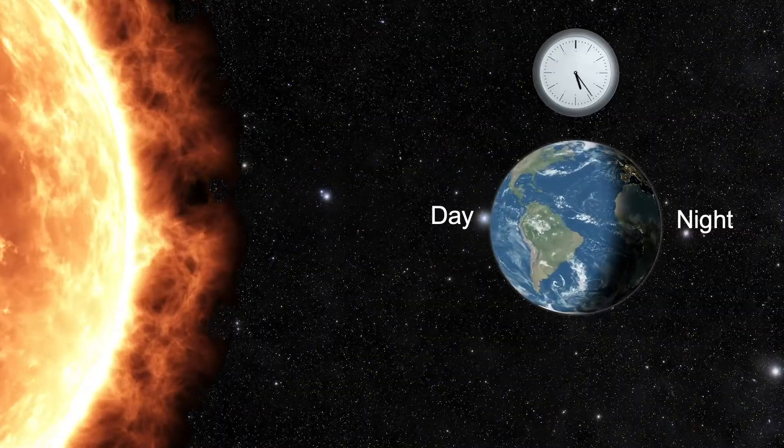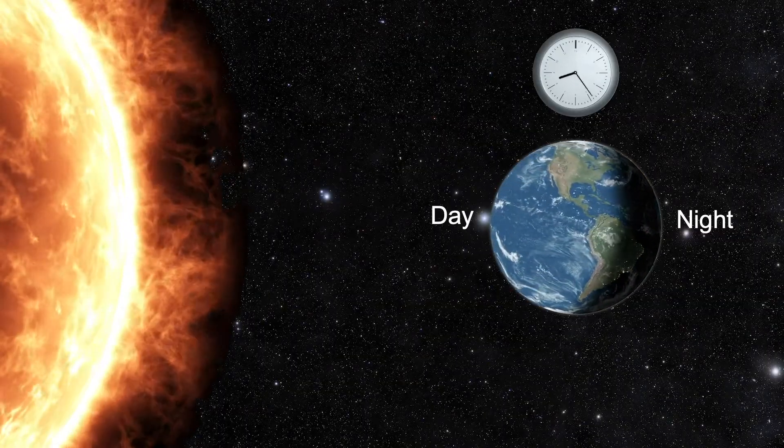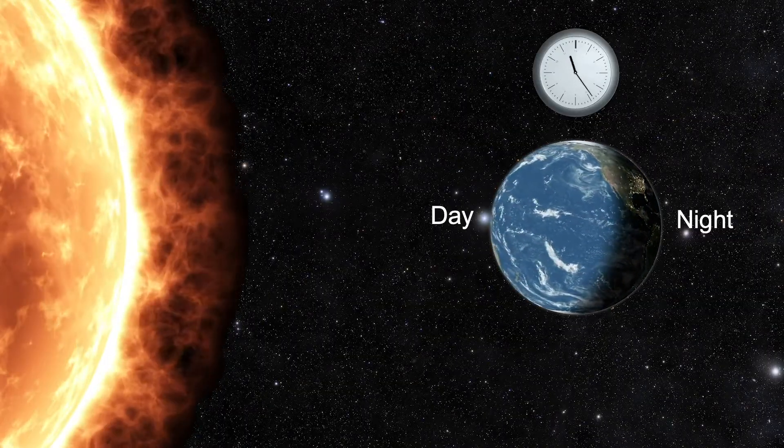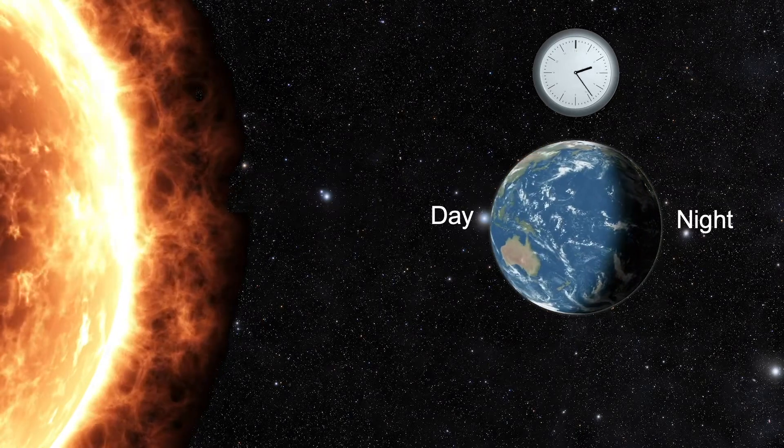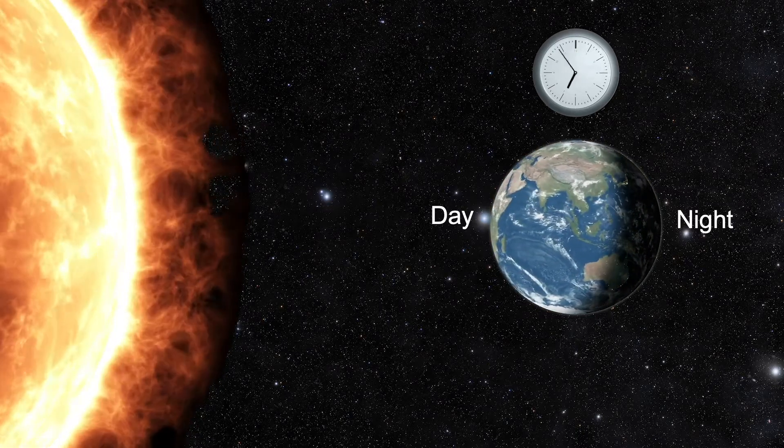It takes the Earth 24 hours to complete one rotation. The repeating rotation of Earth is why we experience the daily pattern of day and night.